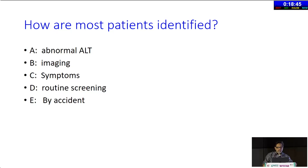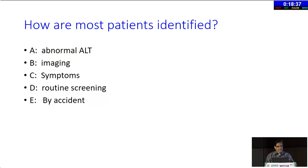How are most patients identified? Abnormal ALT, imaging symptoms, routine screening, or by accident?